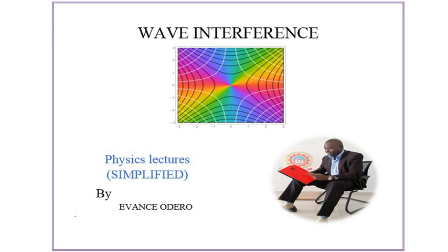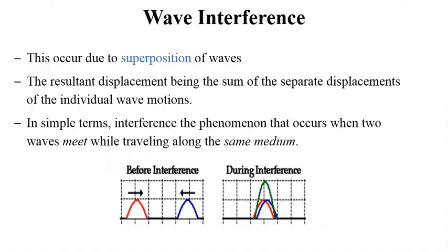Welcome to the study of wave interference. I would want us to study some concepts about this and we need to go straight to the content. Wave interference occurs due to superposition of waves, the resultant displacement being the sum of the separate displacements of individual wave motions.